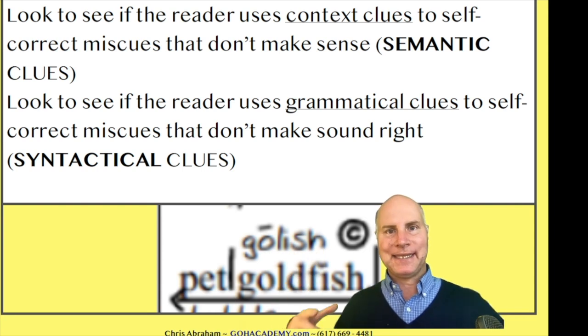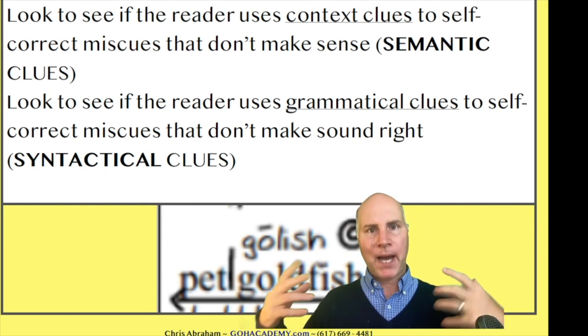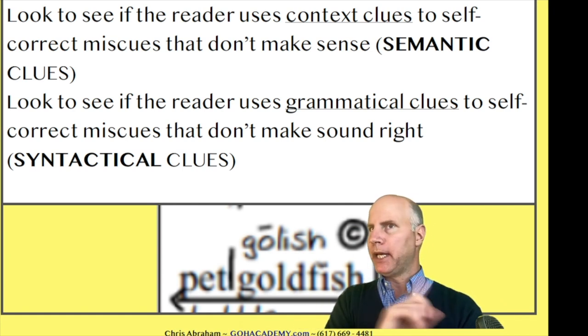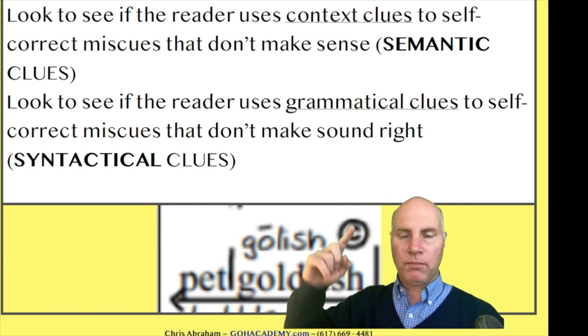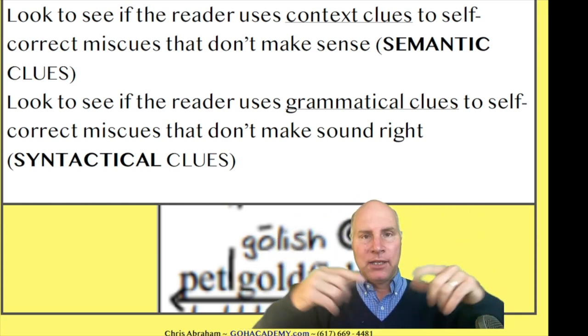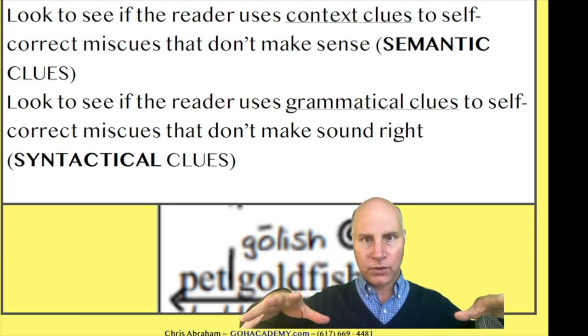Now, self-correcting isn't a skill, it's a byproduct. It's a byproduct of them going, hmm, pet golish doesn't make any sense. And so their mind—the wheels in their mind turn—and it says it doesn't make any sense, so they start to look for context clues.